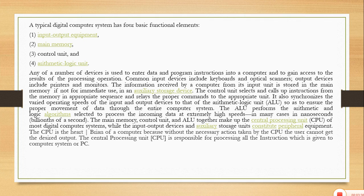The CPU is called the heart or brain of the computer because without it the computer cannot process data and the user cannot get the desired output. The central processing unit is responsible for handling all the raw data and processing it according to the instructions of the user. It has three components: the main memory, the control unit, and the arithmetic logic unit.